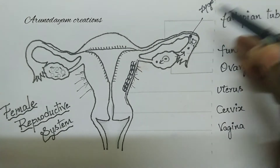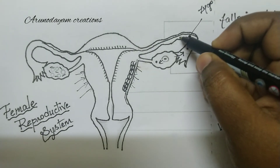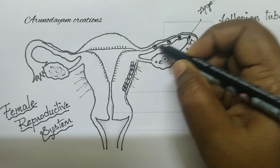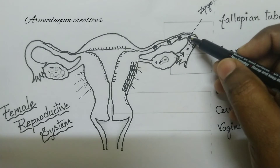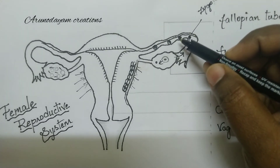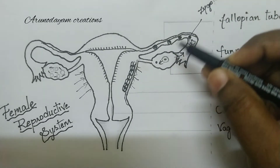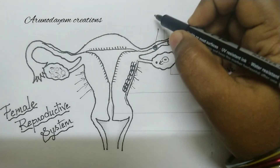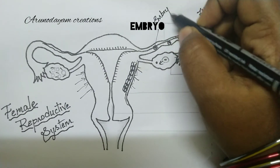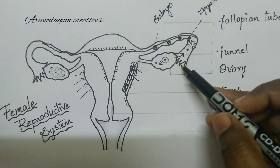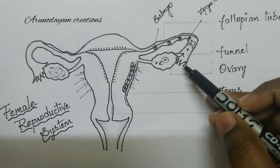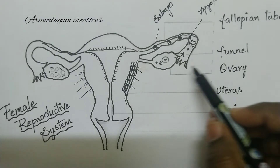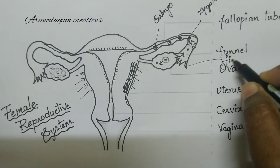The zygote undergoes mitosis: 1 cell becomes 2, 2 becomes 4, 4 becomes 8. The zygote undergoes mitosis and develops into so many cells. This mass of cells is called an embryo. This embryo, due to the movement of finger-like structures called fimbriae present at the end of the fallopian tube, is moved along.